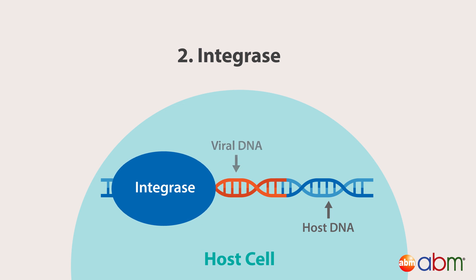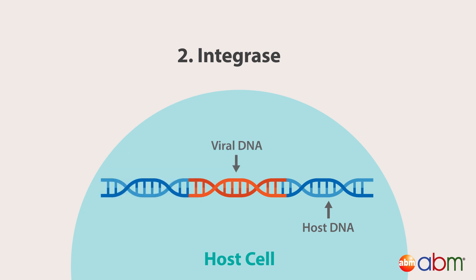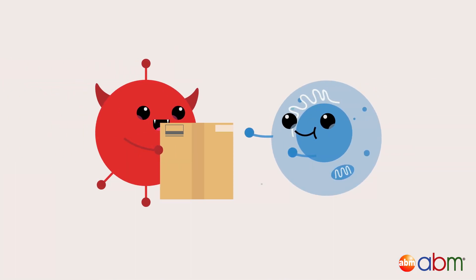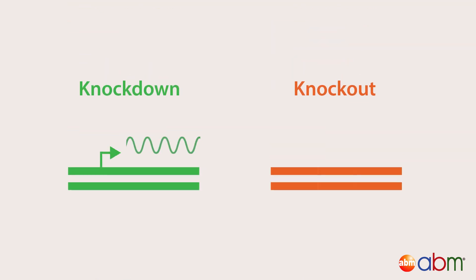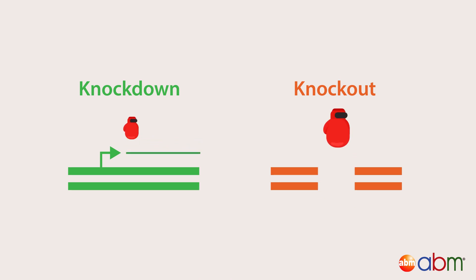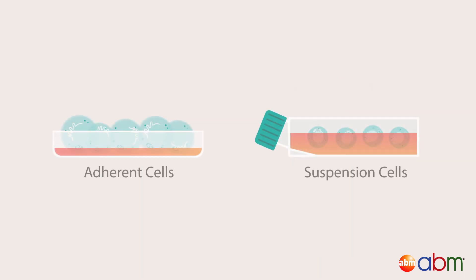a reverse transcriptase, which converts viral RNA into double-stranded viral DNA, and integrase, which enables the viral DNA to be inserted into the host cell's DNA. Using a recombinant lentivirus, you can deliver cDNA, shRNA, and sgRNA to stably express, knockdown, or knock out your gene of interest in your target cells.